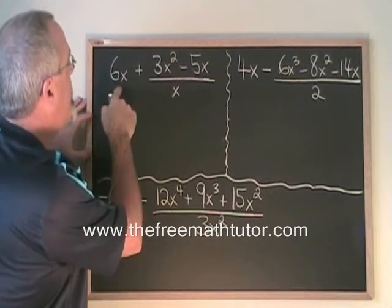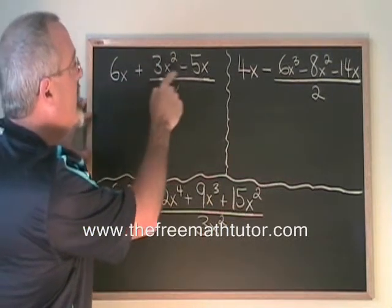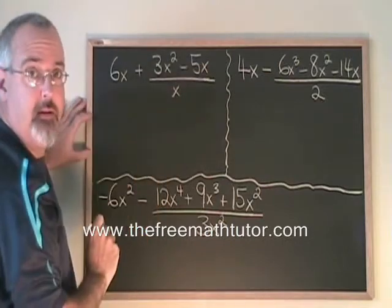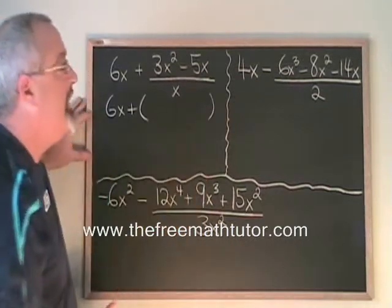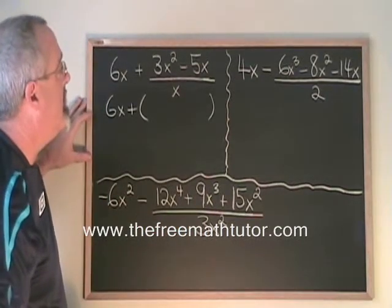In this question, we have 6x plus 3x squared minus 5x over x. I write 6x plus, and I put a bracket, and then I put the answer to the division inside the bracket.